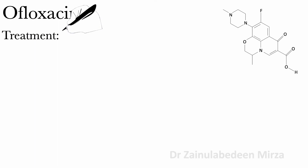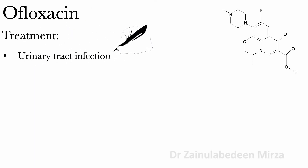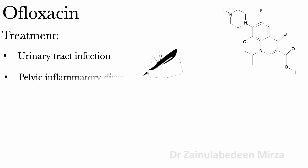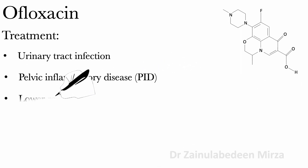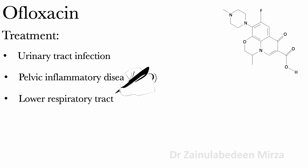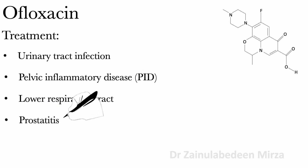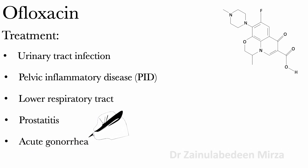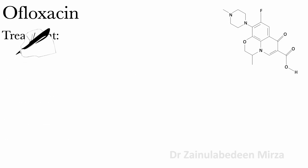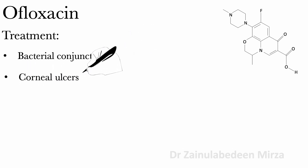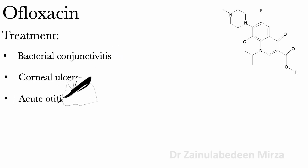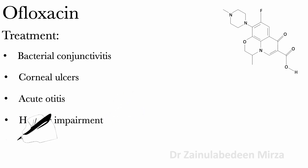Ofloxacin is used to treat urinary tract infections. Ofloxacin is contraindicated in cases of hypersensitivity, hepatic impairment, and renal impairment.